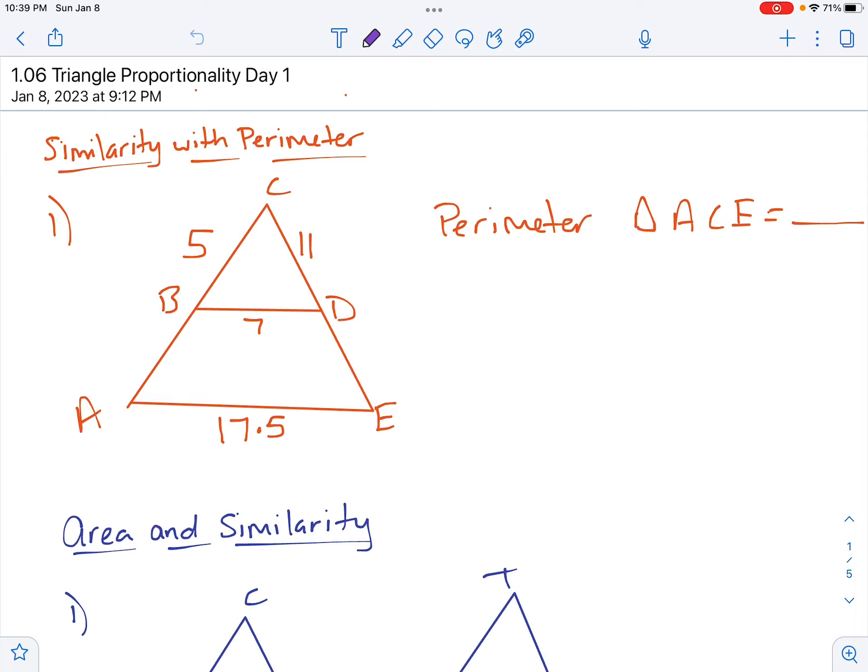How you do that is you set up ratios where you have side over side equals perimeter over perimeter. For this one, just make sure that if the small triangle is on top, the small triangle has to stay on top. So if we look at our triangles, we have the bottom of that little yellow triangle.